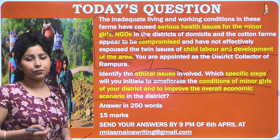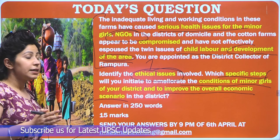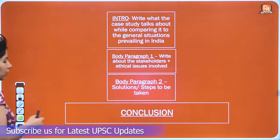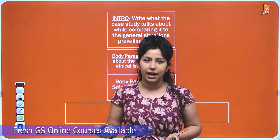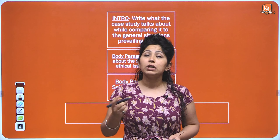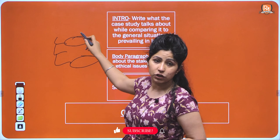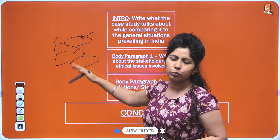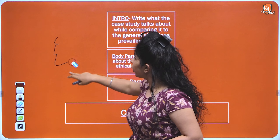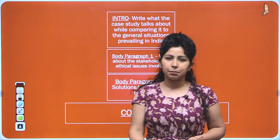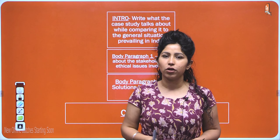Unlike previous case studies where you had to take a stand and write three options, here you do not take a stand — you give solutions. Ethics is about using your knowledge of GS Papers 1, 2, and 3 to your benefit. Use all the acts, rules, and regulations you are aware of. The structure will be: introduction, body paragraph 1 covering stakeholders and ethical issues, body paragraph 2 providing solutions, and a conclusion summarizing with a way forward.